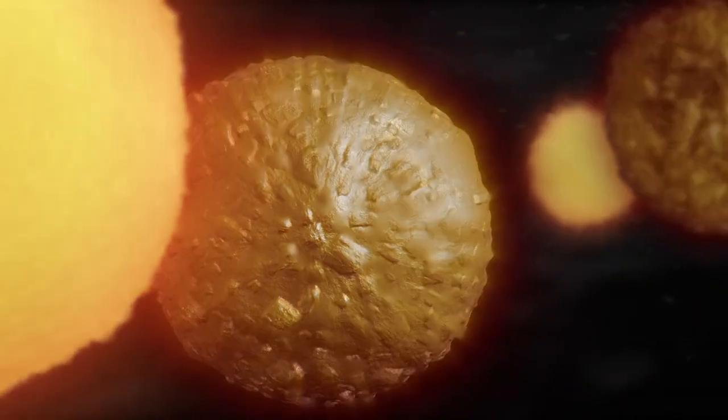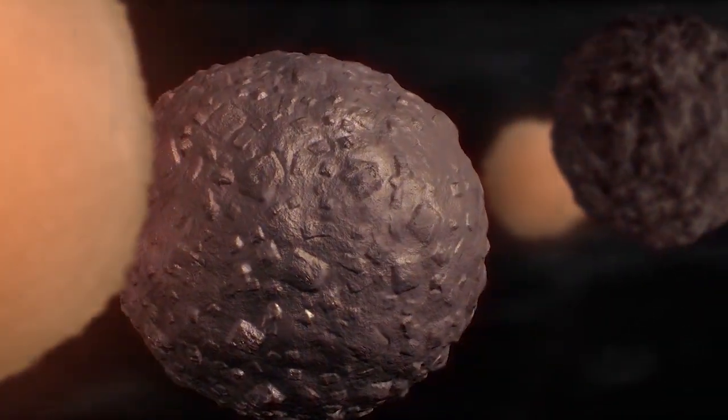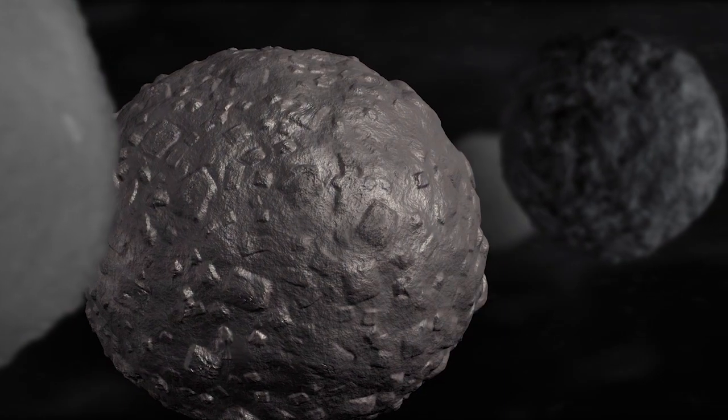Deep within the disk, clumps of dust not much larger than a grain of wheat are flash heated into droplets of molten rock, called chondrules. The source of this heat remains a mystery.